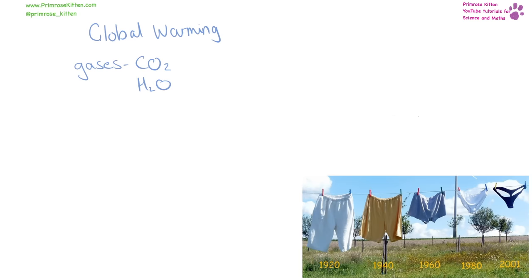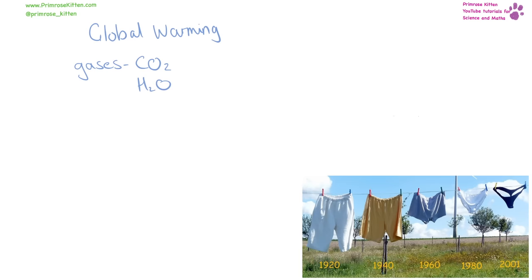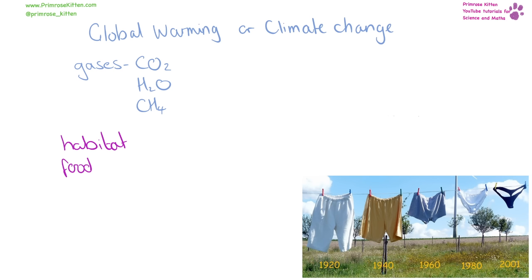There are a number of gases that contribute to global warming: carbon dioxide, water vapour, and methane being the main ones. Global warming can be a slightly confusing term because not everywhere is getting hotter — some places are getting colder, some drier, some windier. This is climate change. So while Australia may be having its hottest Christmas ever, we could be having our coldest Christmas ever in the UK, and this is all due to global warming or climate change. This has a massive impact on animals, predominantly on their habitat and food sources. Polar bears live on ice caps, hunt, and fish, then rest on floating blocks of ice. If the poles are getting warmer and the ice melts, polar bears after a long time fishing won't have anywhere to rest and are at significant risk of drowning.